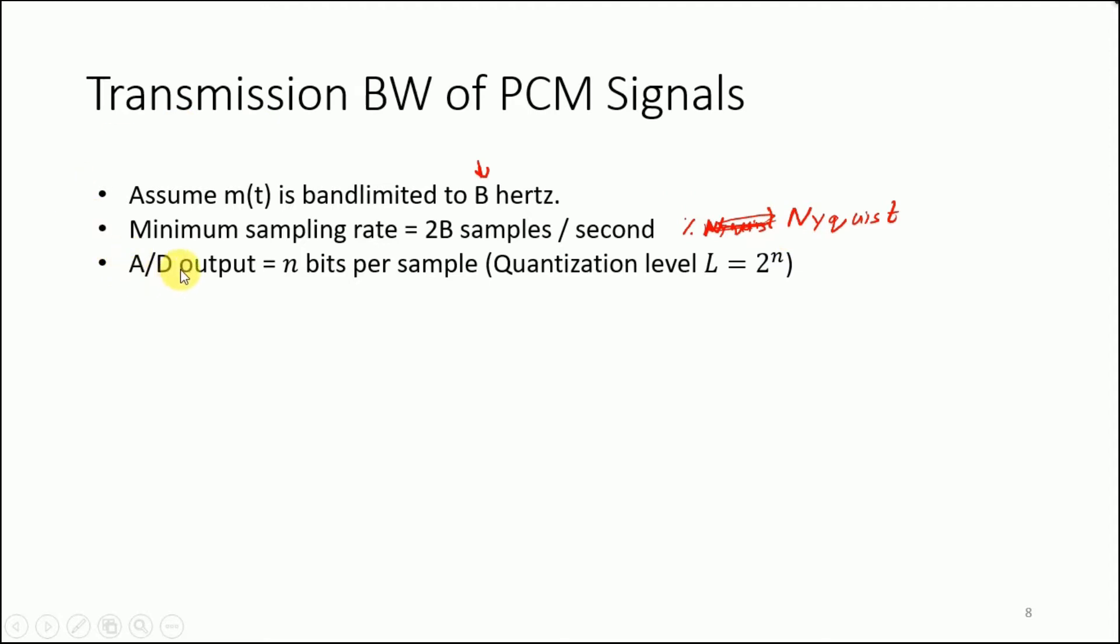We can suggest that the capacity C is simply 2nB. This n is coming from the quantizer, this is the bandwidth of the message signal, and this 2 is coming from the sampling frequency.